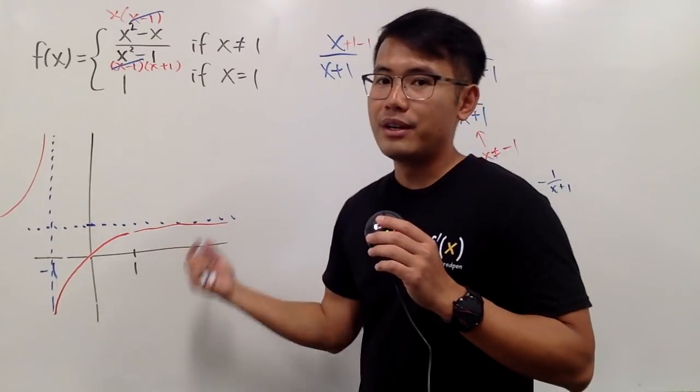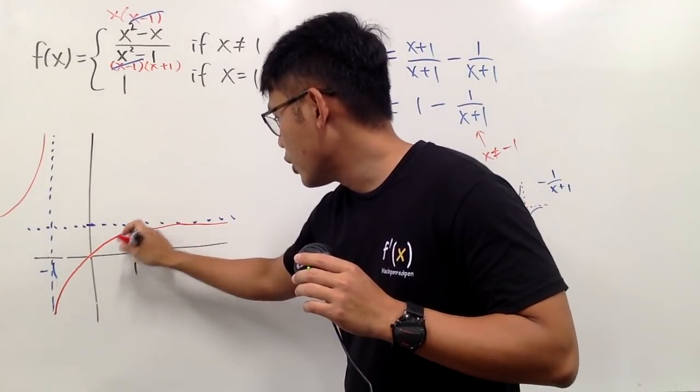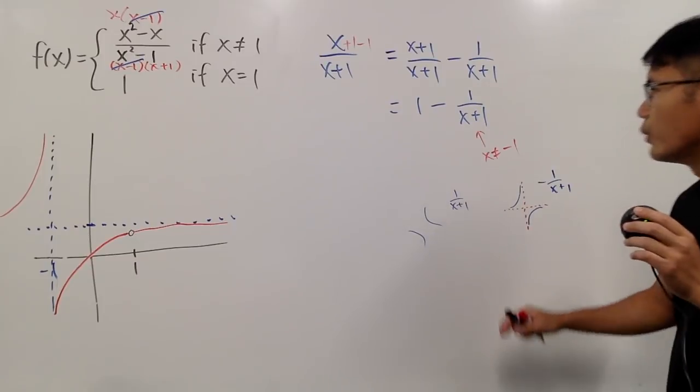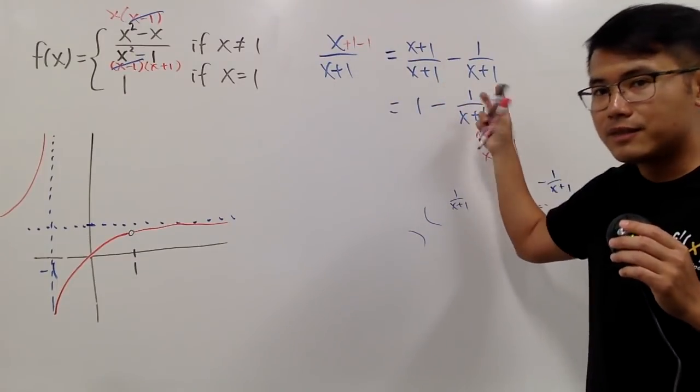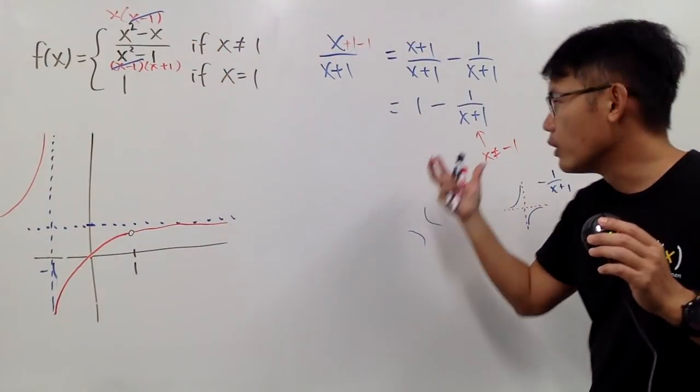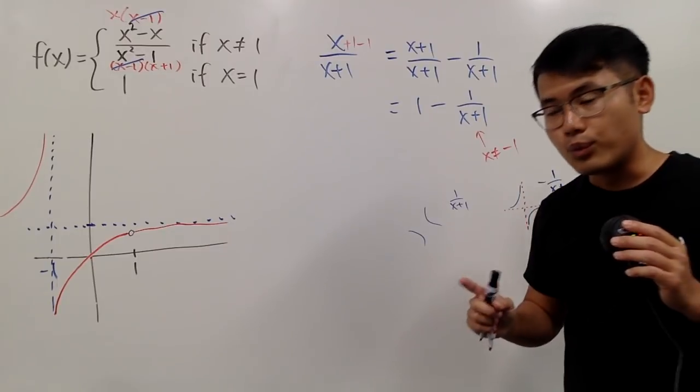So technically, this right here is the graph. And I should be putting an open circle right here, and you might be wondering, well, we simplify this for what? But we simplify this, we factor this and cancel this so that we know the graph, how it looks like when x is not equal to 1.